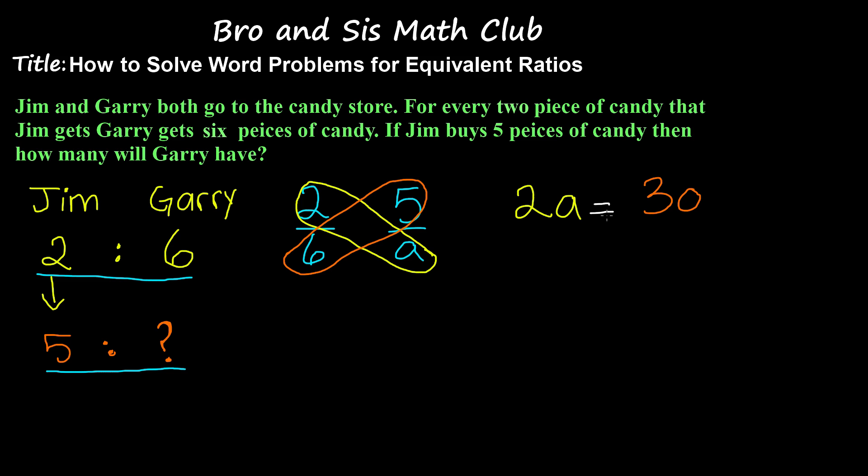So now we're going to use inverse operations. Since we're multiplying 2 by a, now we're going to divide 2a by 2 and we're going to do the same on the other side. So 2a divided by 2 gives us a because 2 and 2 cancel each other out, and 30 divided by 2 gives us 15.